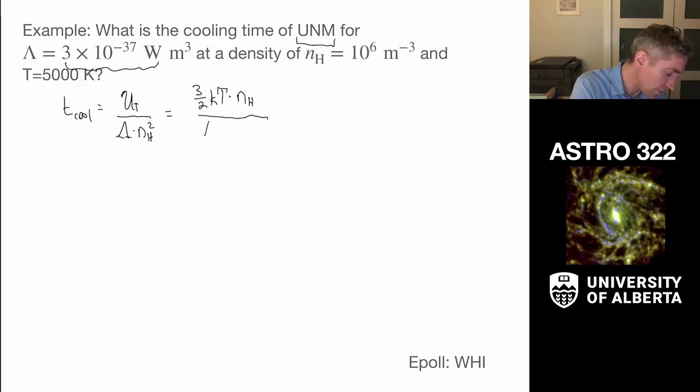which is basically the energy density from thermal motion. Then in the denominator, I have lambda, which I calculated, and NH squared. So this is basically, again, kind of how far it has to cool. That's the thermal energy.